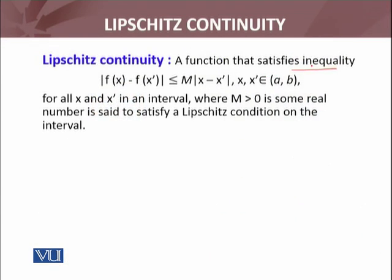So a function f satisfies the following inequality: |f(x) - f(x')| ≤ M|x - x'|, where x and x' are two numbers from the open interval (a, b), and M is a real number greater than 0. Not every function satisfies this condition. Functions that do satisfy this condition — we will say that those functions are Lipschitz continuous on the interval (a, b).